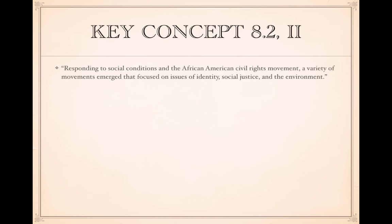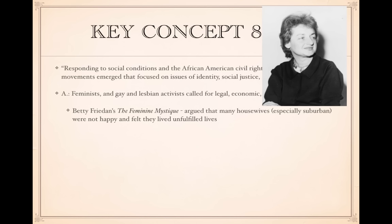Roman numeral two: responding to social conditions in the African American civil rights movement, a variety of movements emerged focused on identity, social justice, and the environment. Feminists and gay and lesbian activists called for legal, economic, and social equality as an extension of the civil rights movement. Betty Friedan is a very famous author — she wrote The Feminine Mystique and argued that many suburban housewives were unhappy, feeling they lived unfulfilled lives because they were confined to home and raising children and wanted more out of life.